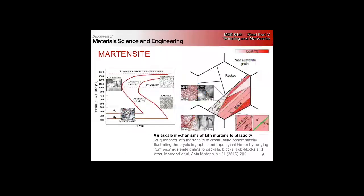Martensite is a shear transformation like twinning, except whereas twinning is for the most part driven by mechanical forces, martensite is really a thermal process — there is no time dependency on it. Once you cool down to a given temperature you start, and as you continue to cool when you hit your martensite finish temperature you'll be at 100% martensite, provided you cool quickly enough to miss the nose of the pearlite, bainite, or Widmanstätten transformations on the TTT diagrams.